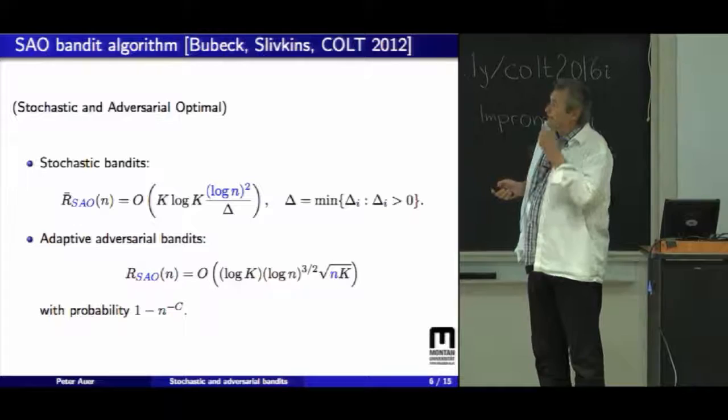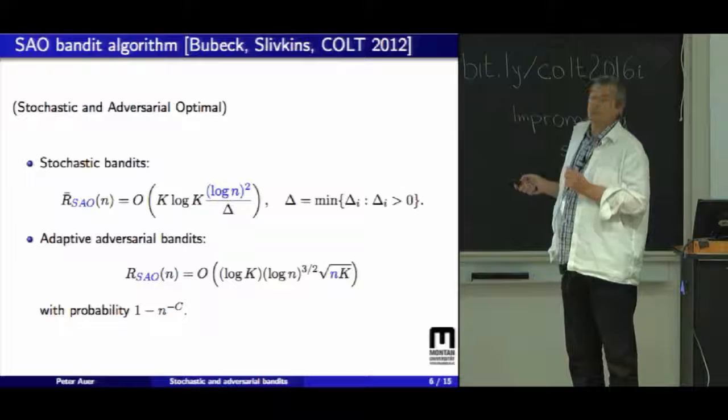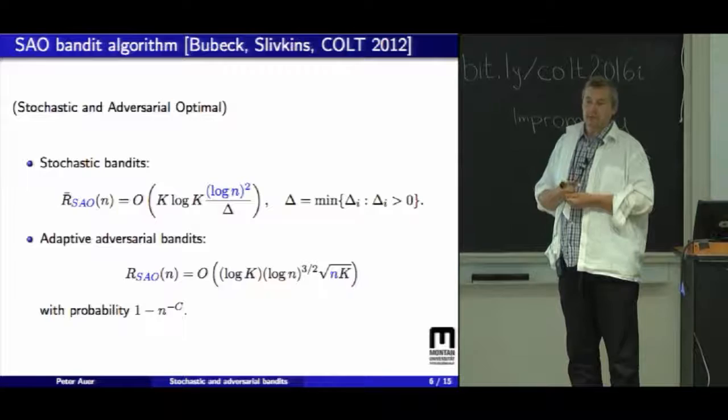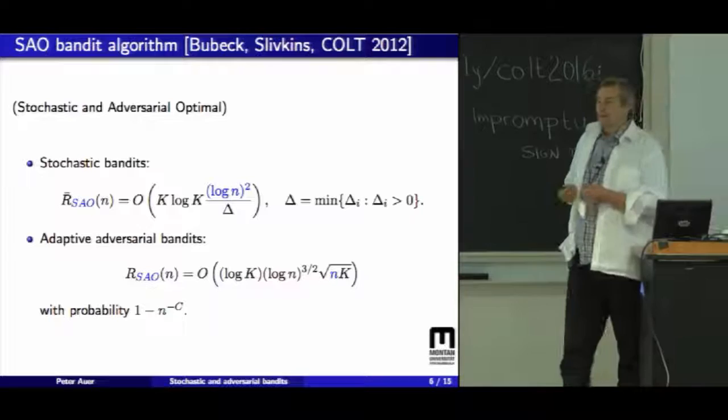There's previous work on this by Bubeck and Slivkins, and they showed an algorithm, the SAO algorithm, stochastic and adversarial optimal, and they show that their algorithm suffers log n squared regret in the stochastic setting and square root n regret in the adversarial setting. The question is, is the square necessary here, or can we do better?